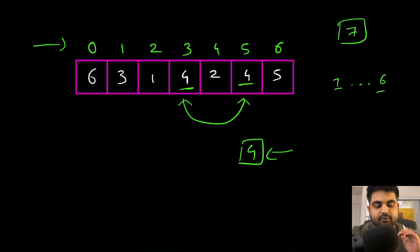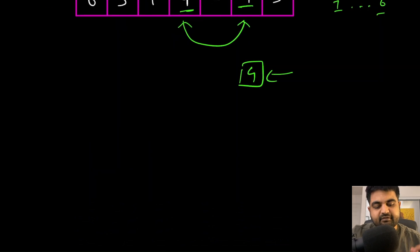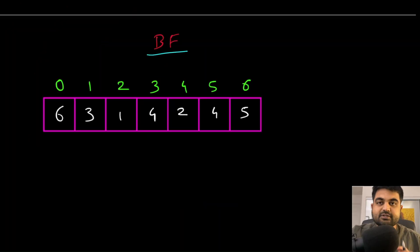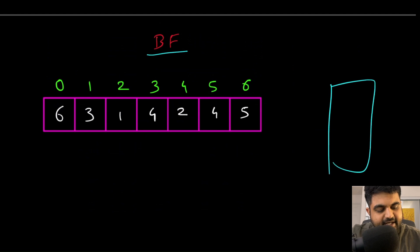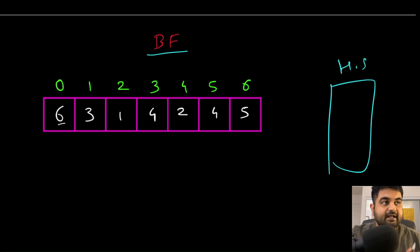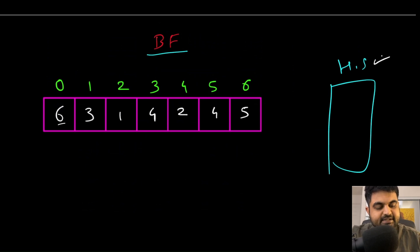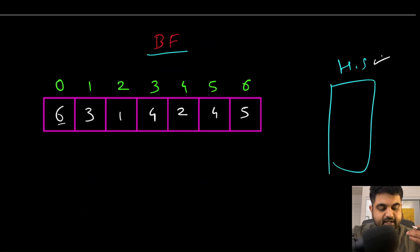Now let's quickly understand the brute force approach. We can simply create a new hash set. For each element we iterate over, we first check whether it is already present in the hash set — if it is, that has to be the repeated element. If not, we move on to the next element.